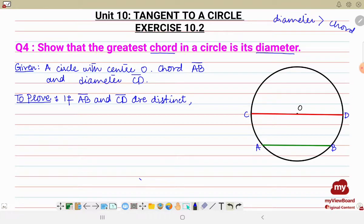So if AB and CD are two different line segments, then what we have to prove: measure CD is greater than measure AB, that is diameter is greater than the chord, or you can say the greatest chord is the diameter. Okay, next is construction.